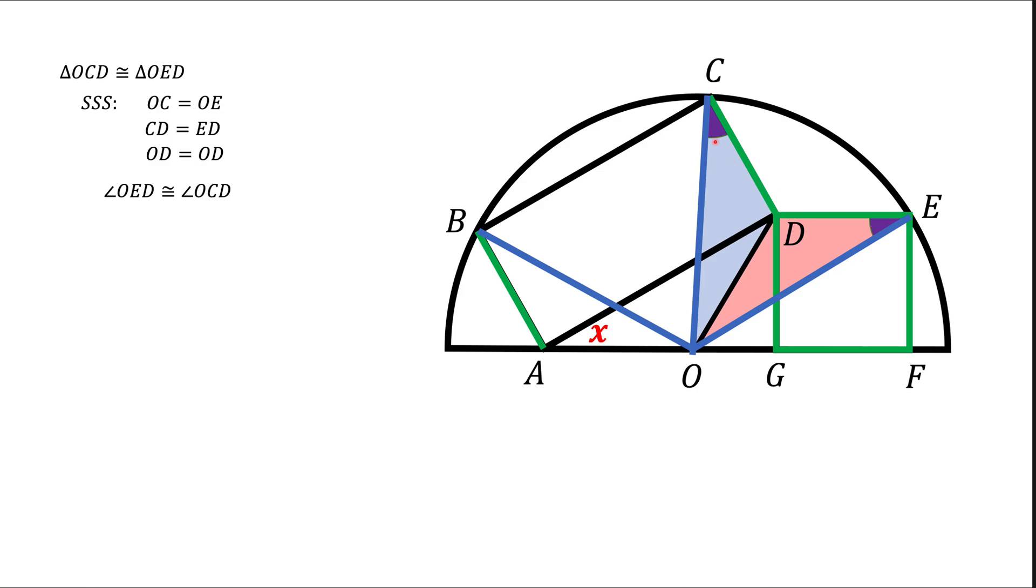Now, since they're congruent, these yellow angles, this one and this one, are also congruent. They're congruent because they're 90 degrees minus purple angle.